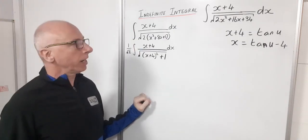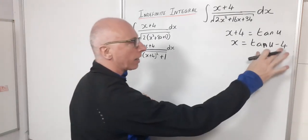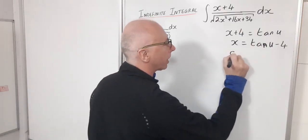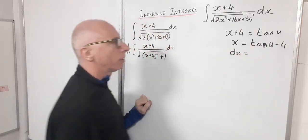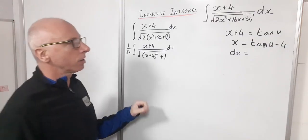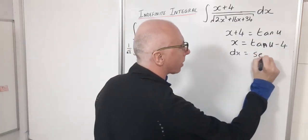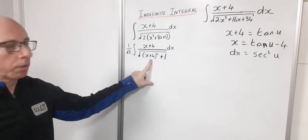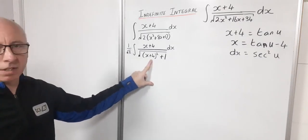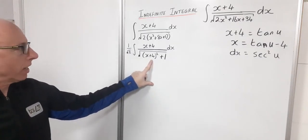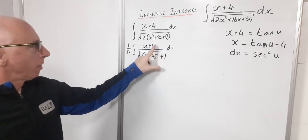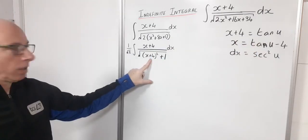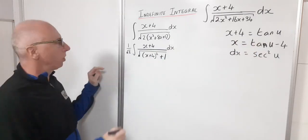Okay now let's take the derivative on both sides and I can get this minus 4 to disappear now by doing it this way. So now I'll have dx equals derivative of tangent is sec squared. So that's going to fall in our laps really nicely because the trig identity coming here is going to lead us right into the right path. My x plus 4 becomes tangent u. So let's get this in terms of u now.